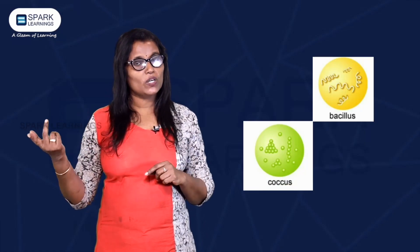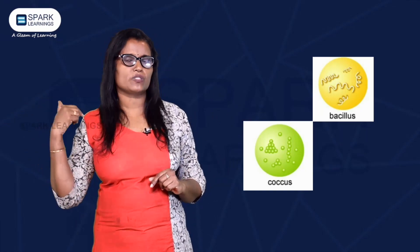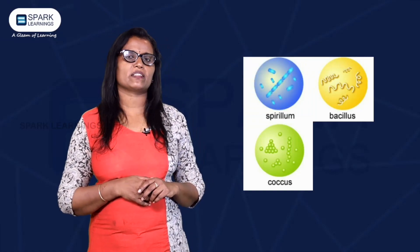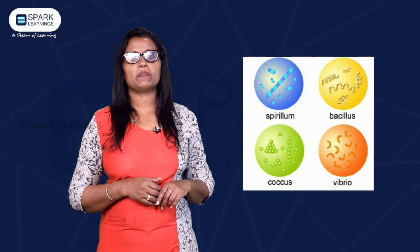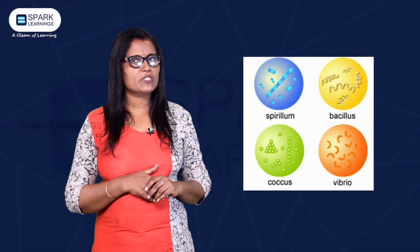Bacteria, as a prokaryotic organism, generally exists in four shapes. The first is rod shape — rod-shaped bacteria are called bacillus, for example tubercle bacillus which causes TB. The second is round shape — round-shaped bacteria are called coccus, for example Streptococcus which causes pneumonia. The third is spring shape — spring-shaped bacteria are called spirilla. The fourth is comma shape — comma-shaped bacteria are called Vibrio, for example Vibrio cholerae.